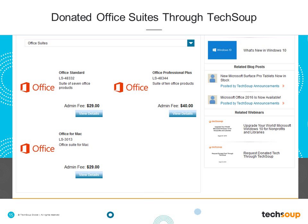Office Standard has a suite of seven Office products, while Professional Plus includes ten products. If you need Access database as an application, you would want to go for the Professional Plus license. The admin fees are $29 for Standard, $40 for Professional Plus, and $29 for Office for Mac — per license. You can request up to 50 licenses of Office suites in a two-year period. You can log into your account history to see what you've requested and know when that two-year period resets.